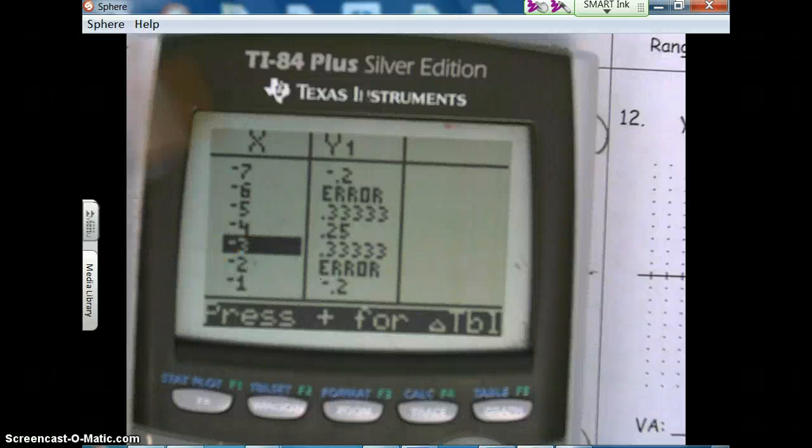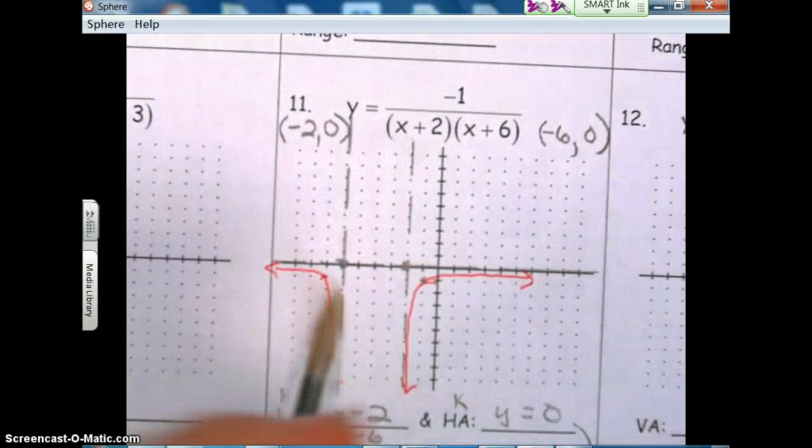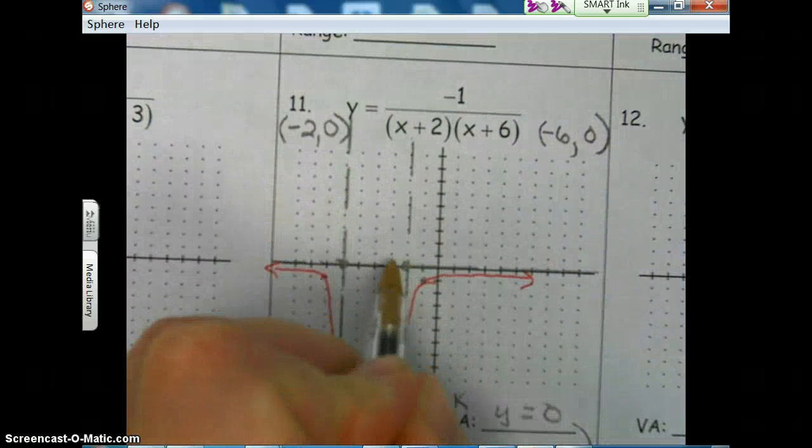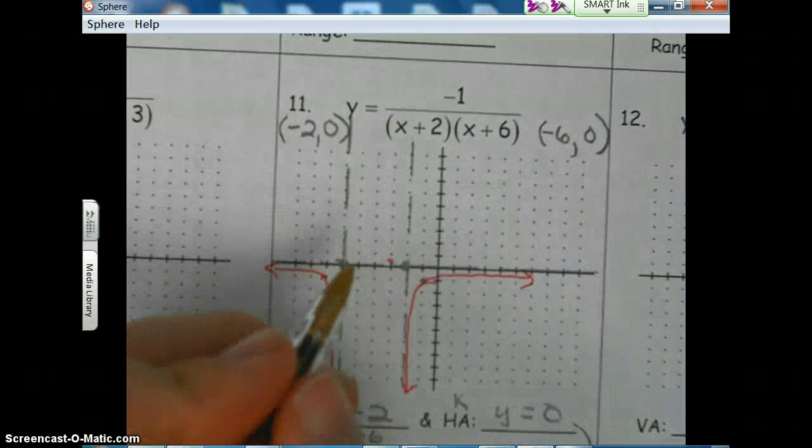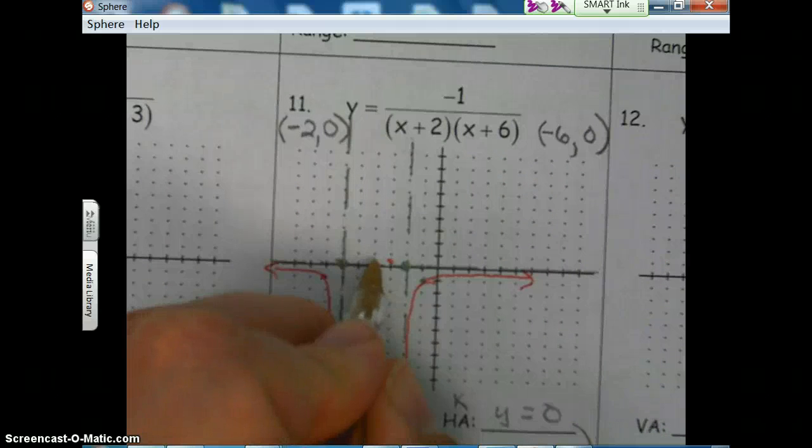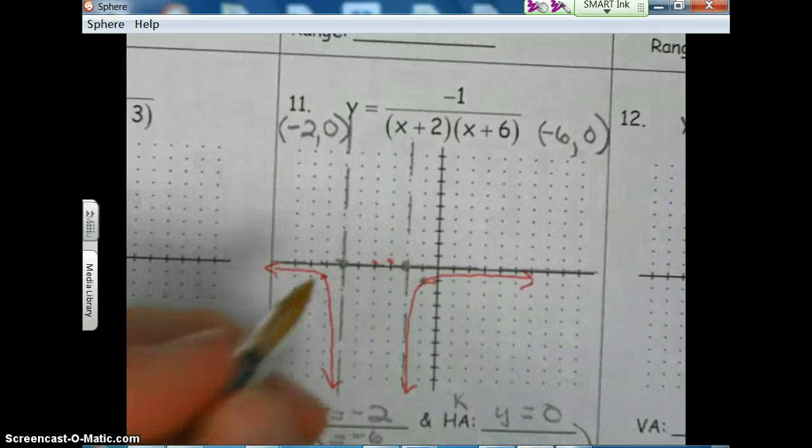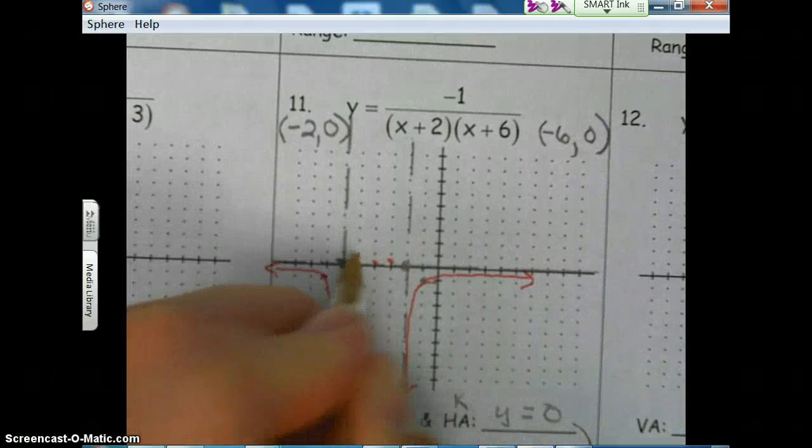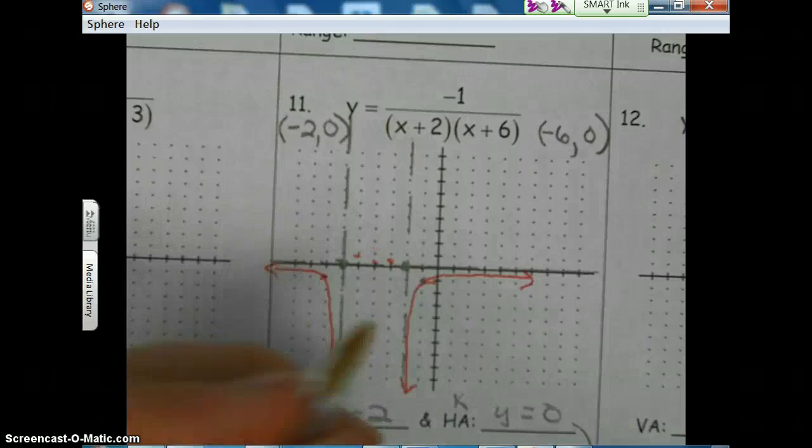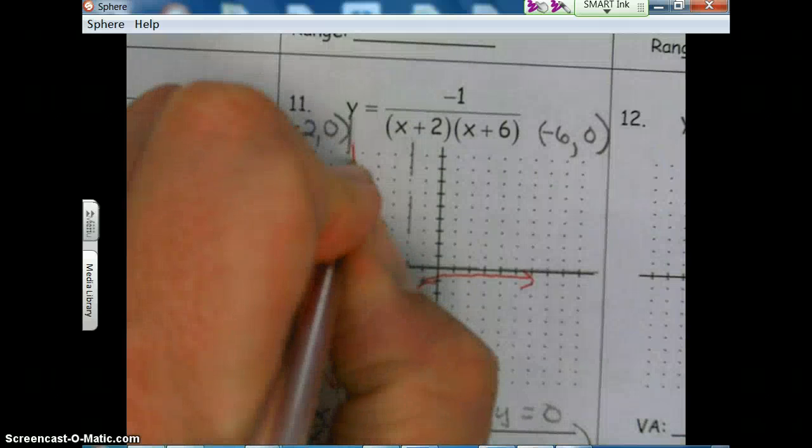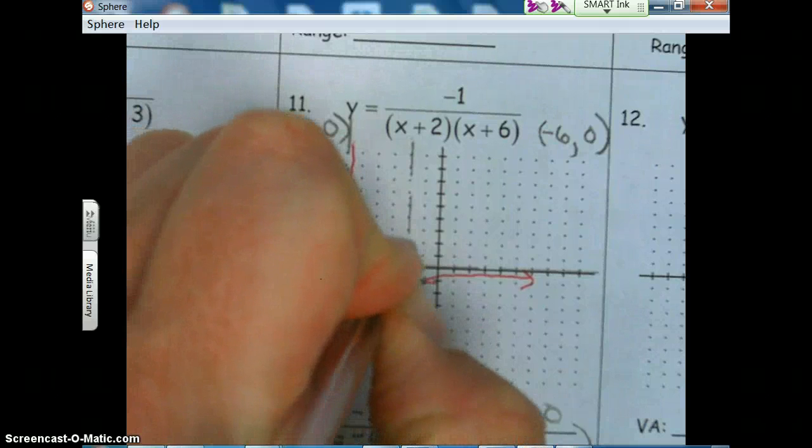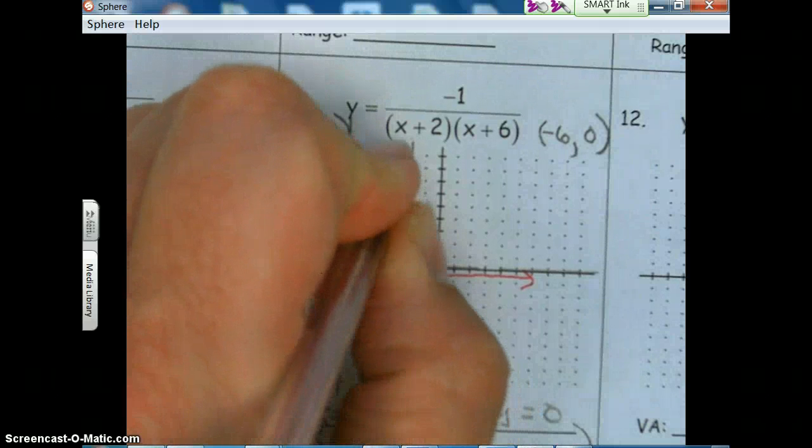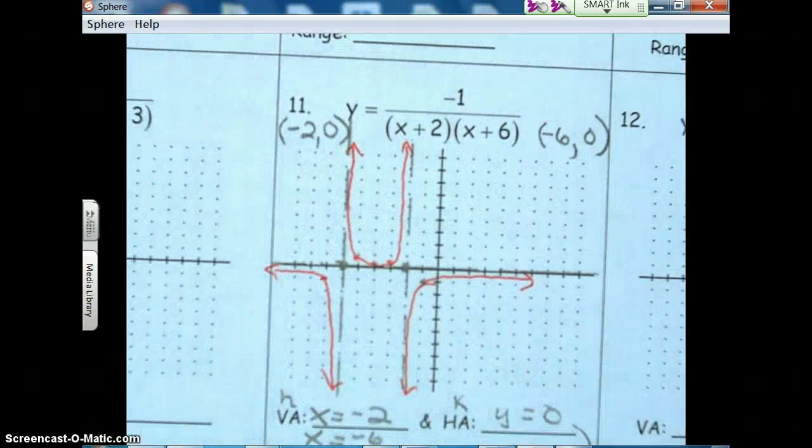So negative three and one-third, negative three and one-third. Negative four and two point two five. And negative five and point three three. So basically what you do here is come down here, curve through these points, and then you just curve right back up. That's what that looks like.